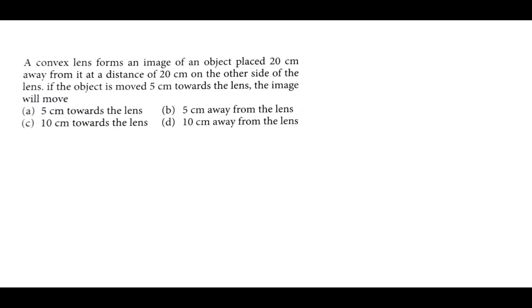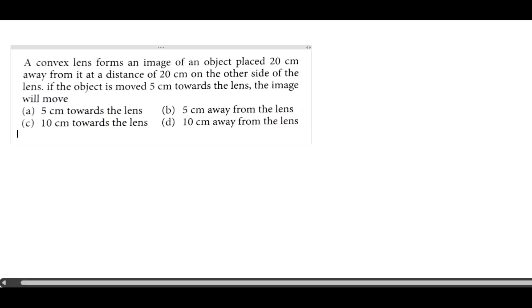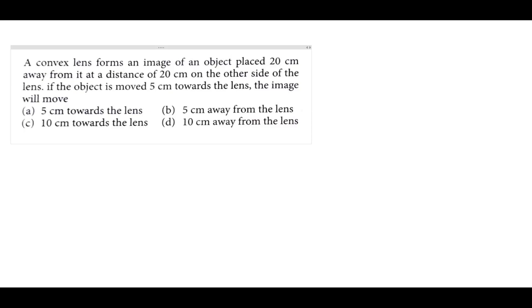So this problem is: A convex lens forms an image of an object placed 20 centimeters away from it at a distance of 20 centimeters on the other side of the lens. If the object moves 5 centimeters towards the lens, the image will move...